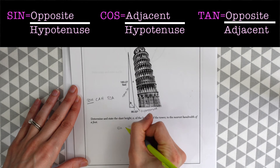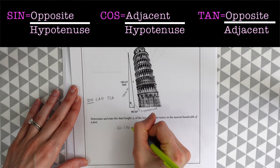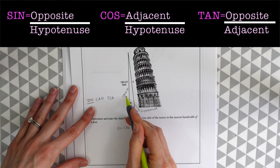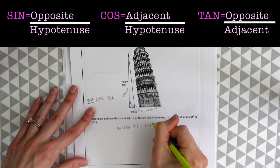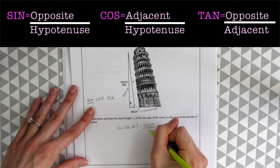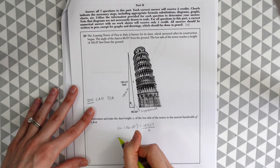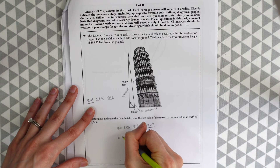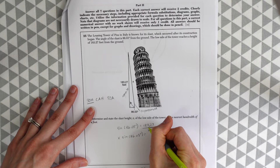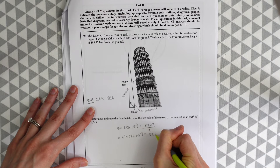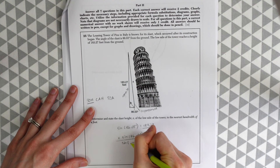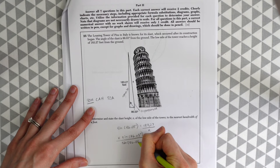So what we're going to use with the opposite over the hypotenuse is sine. So we're going to do the sine of 86.03 degrees, and set it equal to the opposite, 183.27 feet, over the hypotenuse, which is x, which we don't know. So we'll do a little cross-multiplying, and we get x times sine of 86.03 degrees is equal to 183.27. Then we want to get x alone, so we're just going to take our sine and divide it — sine of 86.03 degrees.